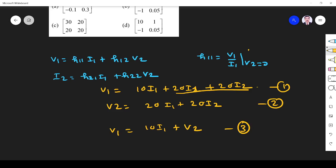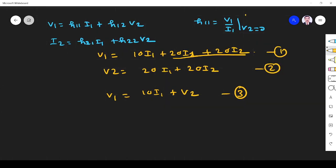Now let's find h11. h11 is given by v1 by i1 provided v2 is zero. So I use equation number 3. From equation 3, when v2 equals zero, v1 by i1 equals 10. That is equal to h11. So we got h11 equals 10.